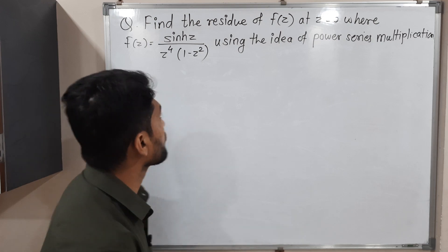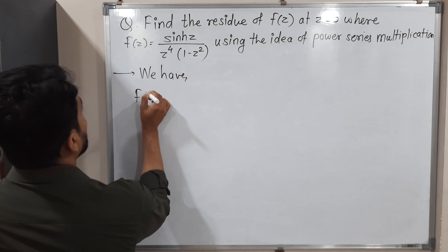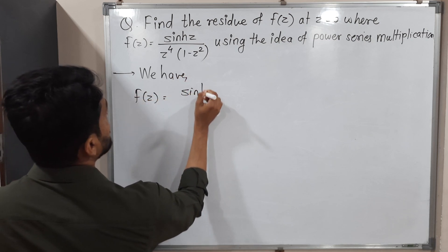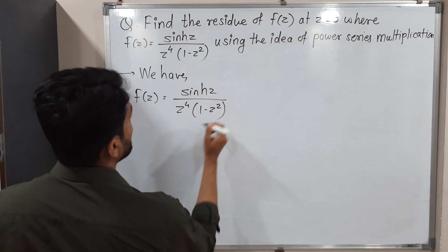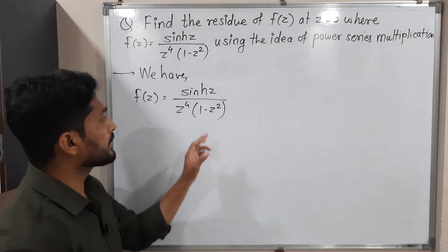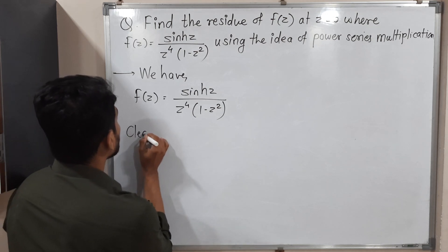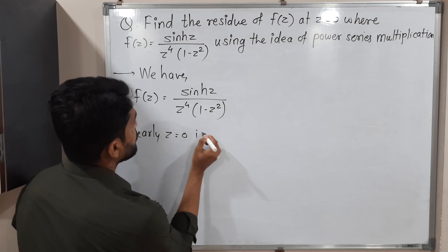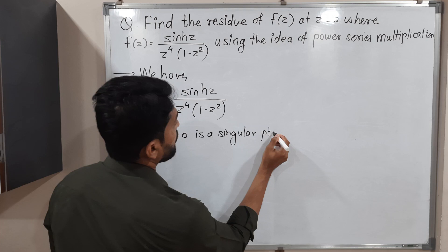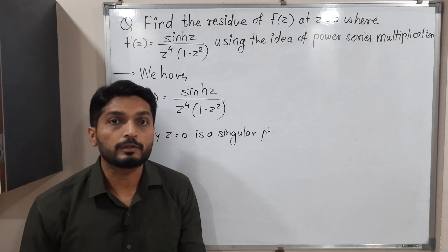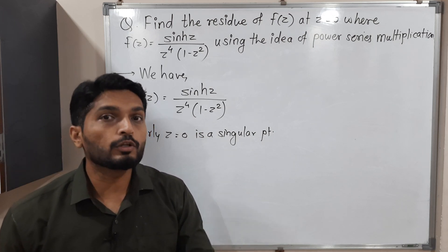Let me write the given function first. The function is f(z) = hyperbolic sine z divided by z⁴ times (1 minus z²). Clearly, if I put z equals 0, the denominator will be 0. So z equals 0 is a singular point — the point where the function is not analytic, or the point where the denominator is 0.